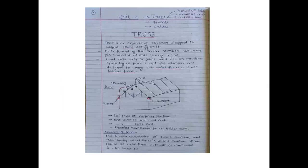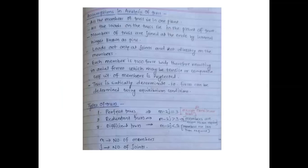Each member is a two-force body, resulting in axial forces which may be tensile or compressive. As shown in the diagram, one force will be from this direction and another force will be from this direction — for that reason it is a two-force body member. Then, truss is statically determinate. If the truss can be solved by using only the three conditions of equilibrium, then that truss is statically determinate. If we are unable to solve using only conditions of equilibrium, then that truss is statically indeterminate.